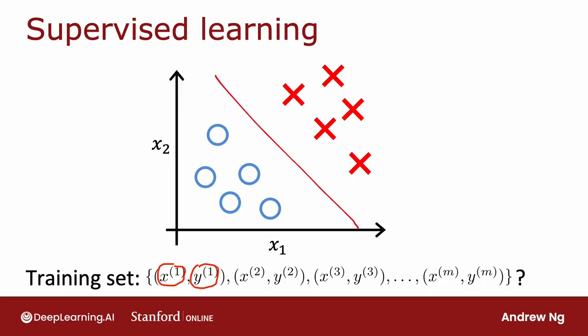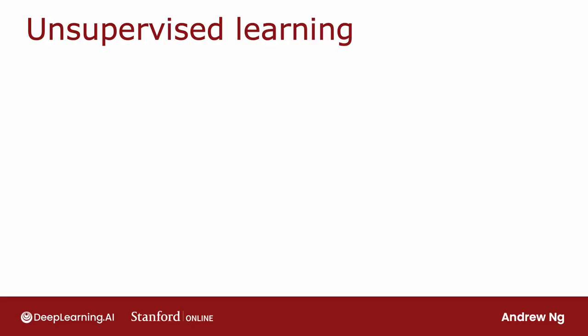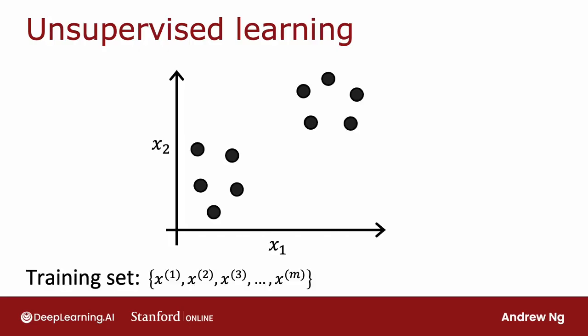In contrast, in unsupervised learning, you're given a dataset like this with just x, but not the labels or the target labels y. And that's why when I plot the dataset, it looks like this, with just dots rather than two classes denoted by the x's and the o's. Because we don't have target labels y, we're not able to tell the algorithm what is the, quote, right answer y that we want it to predict.